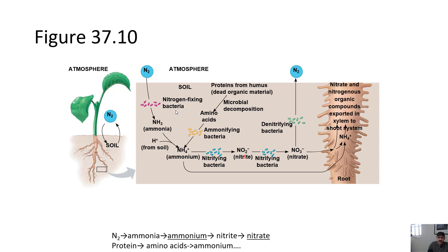Lucky for us, there are all these different kinds of bacteria in the soil. Some of these are called nitrogen-fixing bacteria — I'd like you to know that term. We're not going to learn all the other names like ammonifying, etc., but nitrogen-fixing bacteria take nitrogen from the air and turn it into ammonia, and so on. Eventually, because of other bacteria that interact with these products, they can produce nitrate. Nitrate and ammonium are both usable by plants to make protein.